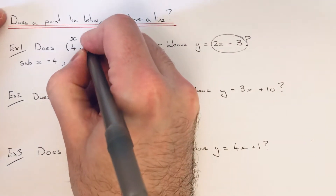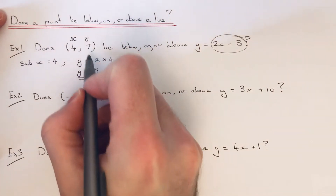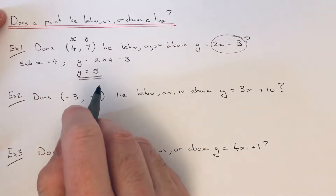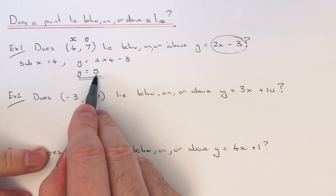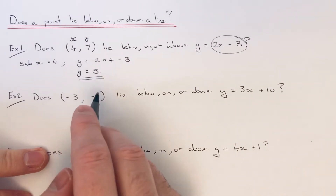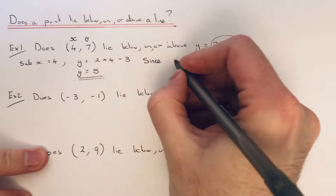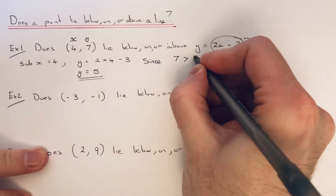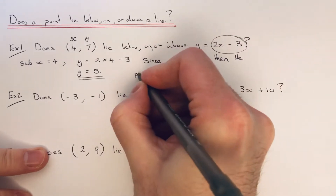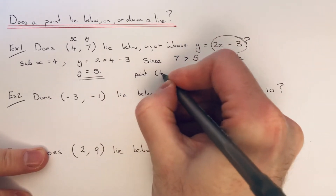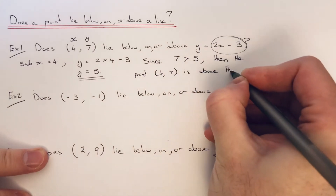Now if we look back at our coordinate point, which is 4, 7, 7 is bigger than 5. So this means that this point is above the straight line. Since 7 is more than 5, then the point 4, 7 is above the line.